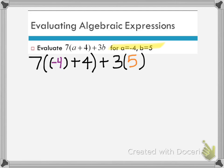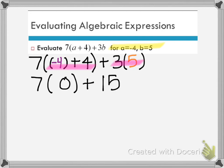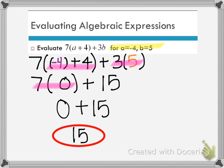It's just numerical now, so I just have to follow my order of operations. First I work inside the parentheses and add negative 4 plus 4, so this becomes 7 times 0. Then I do my multiplication: 3 times 5 gives me 15. I have more multiplication, so I do 7 times 0, which is 0, plus 15, for a final answer of 15.